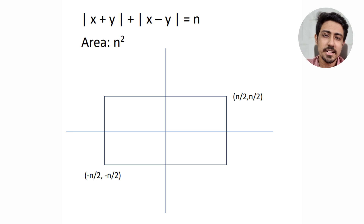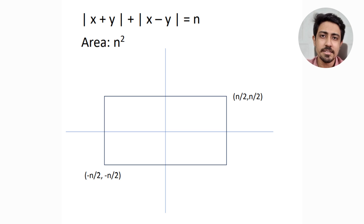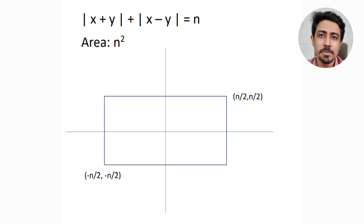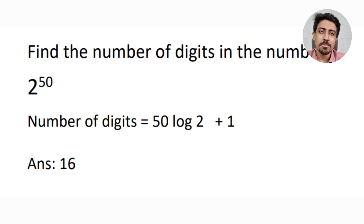If you have another identity like |x + y| + |x − y| = n, this kind of graph looks like a square rotated, and the area of that particular figure will be n².